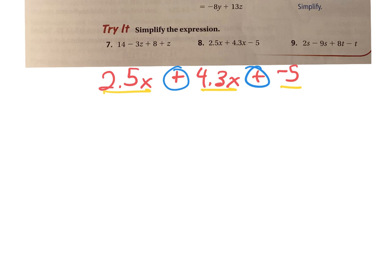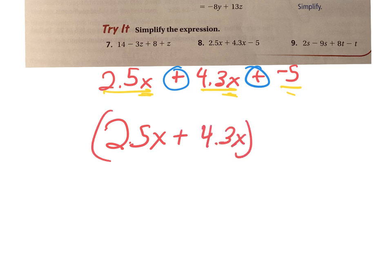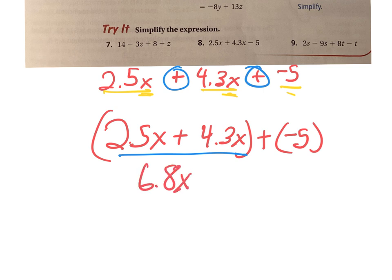I'm going to put the ones that are alike. These both have an x, and this one right here is a constant. So we're going to put the x's together: 2.5x plus 4.3x. We'll put those together and then add my constant, which is minus 5. 2.5x plus 4.3x gives me 6.8x, plus negative 5.